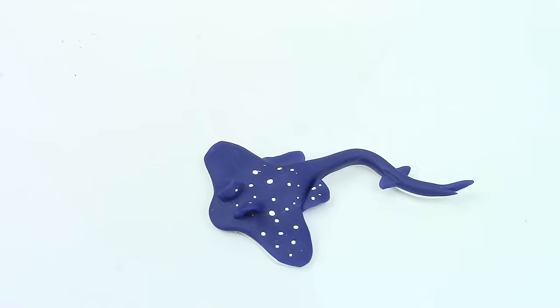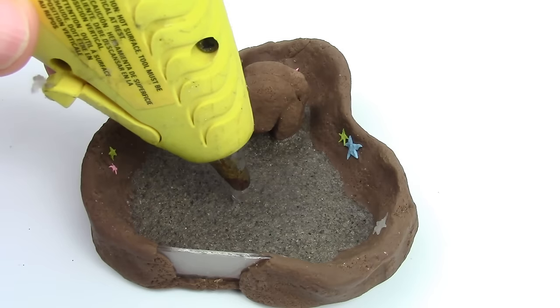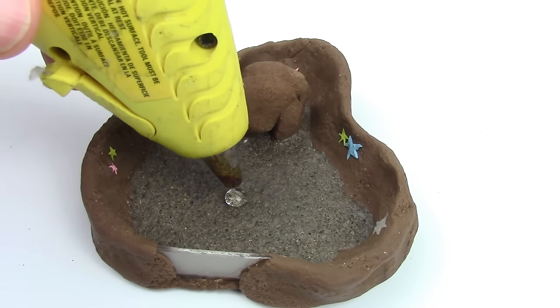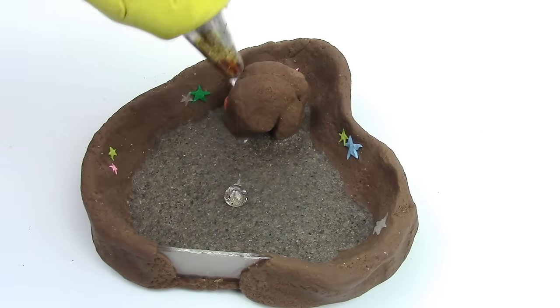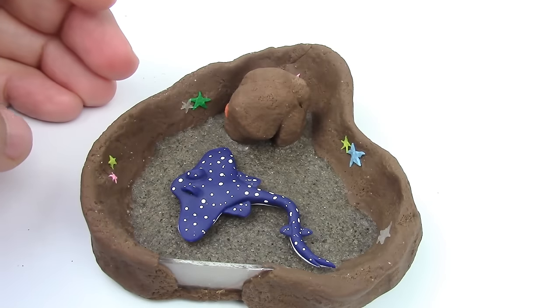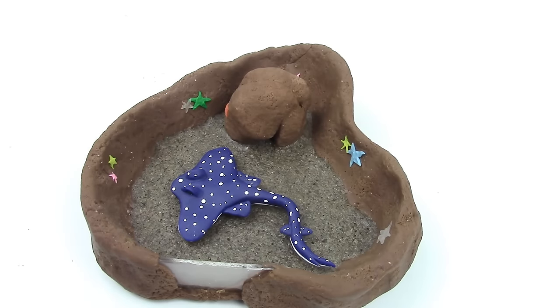Once it's baked, take some white acrylic paint and make some dots. Place your stingray on the sand by putting some glue from your glue gun so that it looks like it's hovering over the sand. If you want it directly on the sand, you can completely skip the glue gun part.